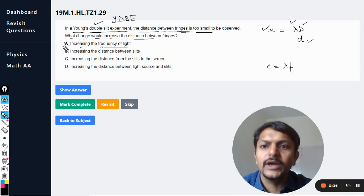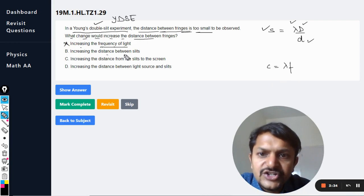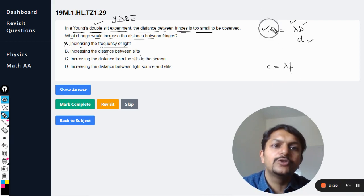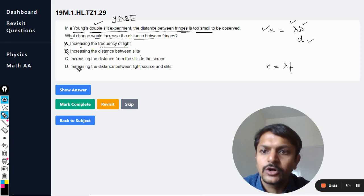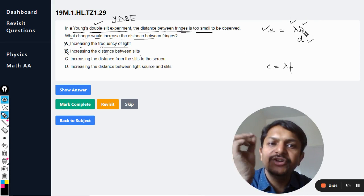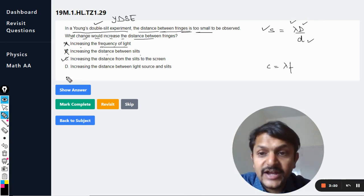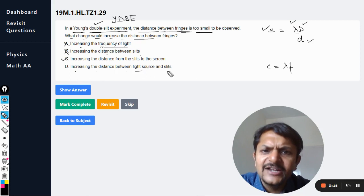Increasing the distance between the slits is going to decrease the spacing, so even this is wrong. Increasing the distance from slit to screen - yeah, if you are increasing capital D, definitely spacing is increasing. So C is correct.